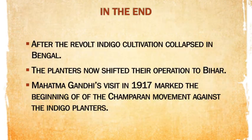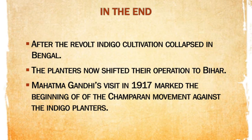In the end, the revolt concluded and indigo cultivation collapsed in Bengal. The planters shifted their operations to Bihar. A famous movement known as the Champaran Movement was also against indigo planters of Bihar, and it started when Mahatma Gandhi visited the Champaran district of Bihar in 1917, marking the beginning of the Champaran Movement. Thank you — signing out, Aman Sharma.